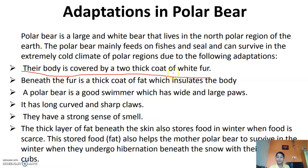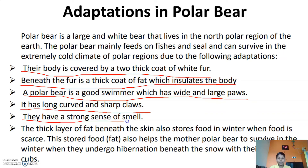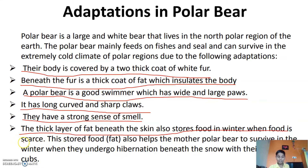The polar bear has adapted itself to the polar region. Their body is covered by two thick coats of white fur. Beneath the fur is a thick coat of fat which insulates the body. A polar bear is a good swimmer which has wide and large paws. It has long, curved and sharp claws and a strong sense of smell.